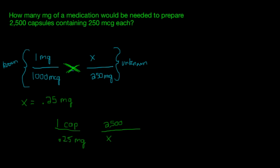There is our x. When we cross multiply and divide, 0.25 times 2,500, divided by 1, that gives us x equals 625. Always remember to label — that is going to be very important. So how many milligrams of medication would be needed to prepare 2,500 capsules containing 250 micrograms each? The answer is going to be 625 milligrams.